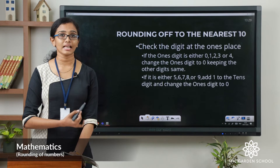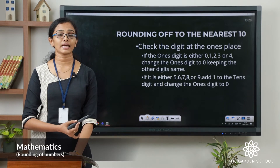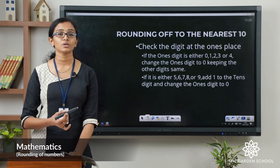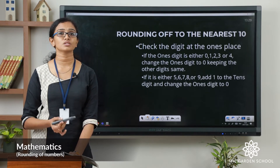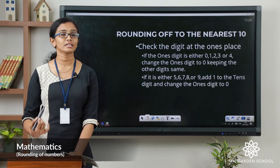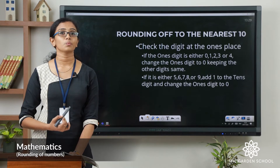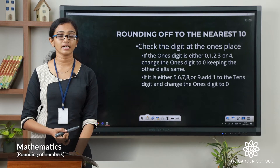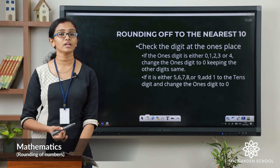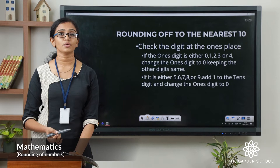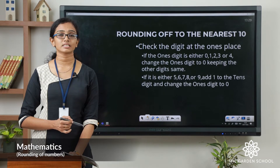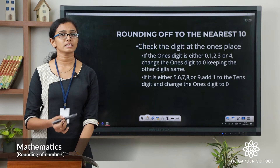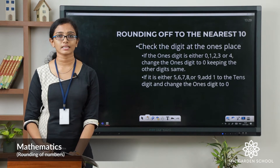If the ones digit is less than 5 — that is if it is either 0, 1, 2, 3, or 4 — you have to change the ones digit to 0 and keep the other digits the same. If the ones digit is 5 or more than 5 — that is if it is either 5, 6, 7, 8, or 9 — you have to add 1 to the tens digit and change the ones digit to 0, and all the other digits should remain the same.